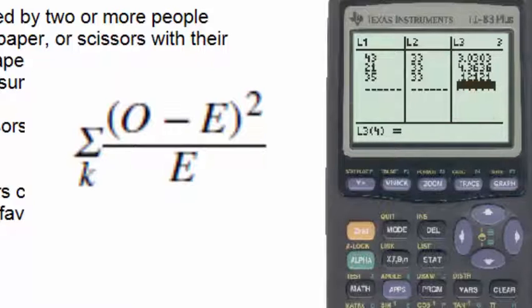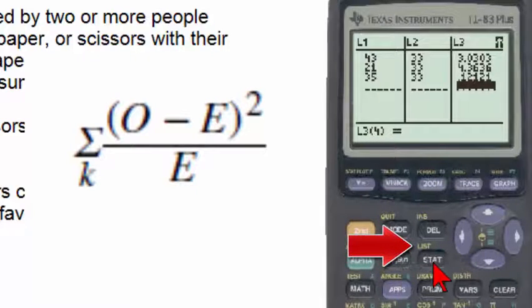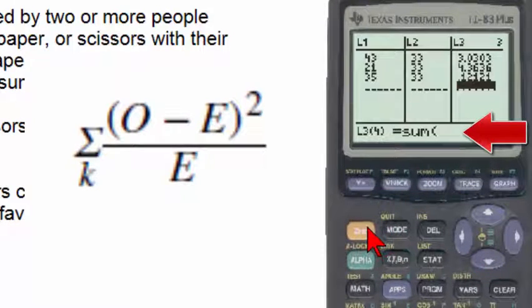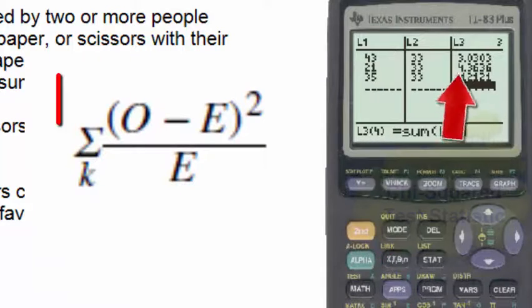To find the chi-squared test statistic we will sum these three numbers, and that can be done again using the second list button math menu, selecting five, and here we'll put in the sum of list three and hit enter.